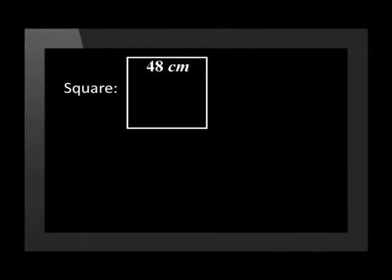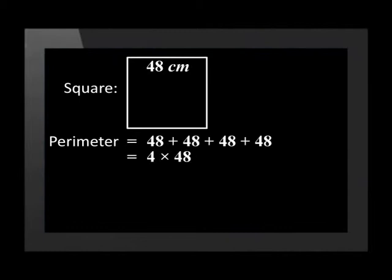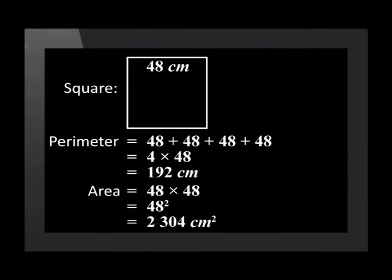Let's look at an example. Here is a square with the length of each side equal to 48 centimeters. We can calculate the perimeter by adding 48 four times or by multiplying 48 by 4. The answer is thus 192 centimeters. The area of this square is calculated by multiplying 48 by itself, that is 48 squared. So the area of the square is 2,304 centimeters squared.